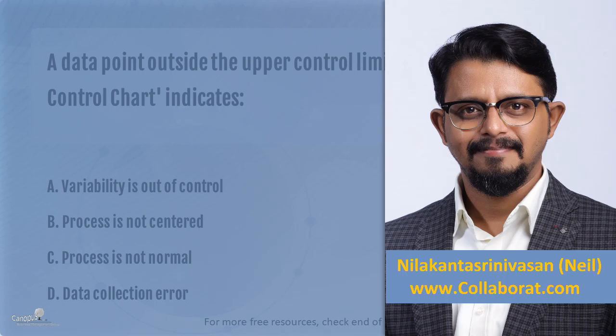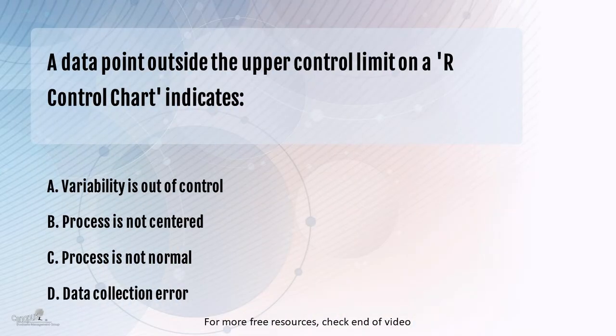Here's another question that relates to the concept of statistical process control or control charts. A data point outside the upper control limit on the R chart, that is R control chart indicates: